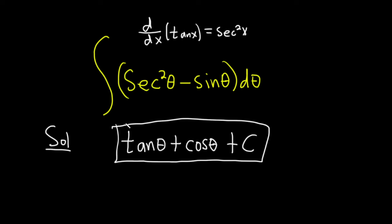And you can check this. Maybe we should. You can check your answer by simply differentiating it. So if you take the derivative of tangent, you get secant squared of theta. You take the derivative of cosine, you get negative sine of theta. And then the derivative of C is 0. So what you have here is exactly what you have in the integrand. So all is good.